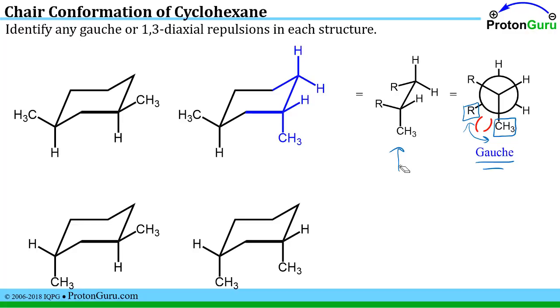Now if I had my methyl group here, which would be an equatorial position, if my methyl group was here it would be beside two hydrogens. So only when I have axial methyl groups do I have gauche interactions.